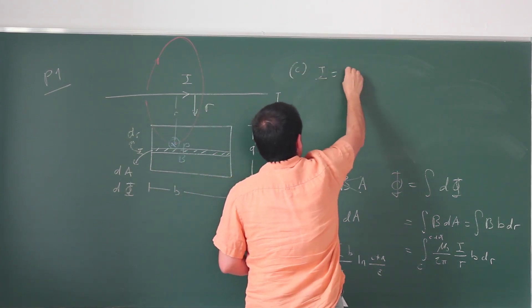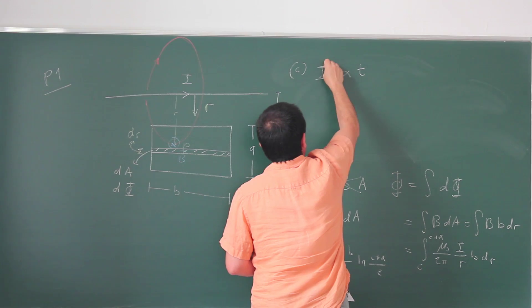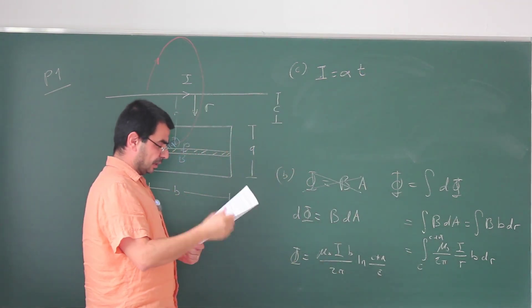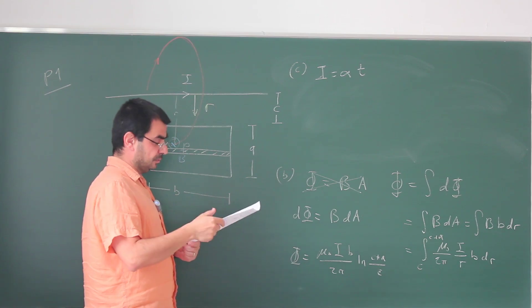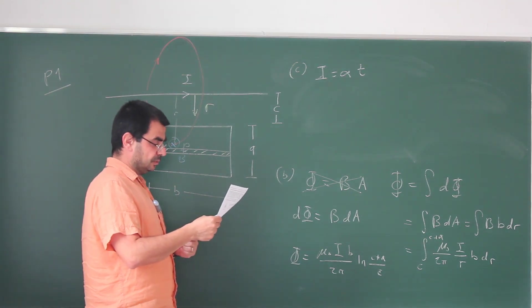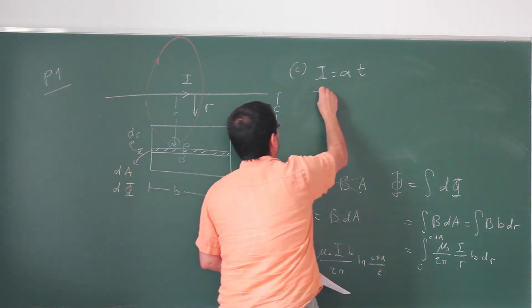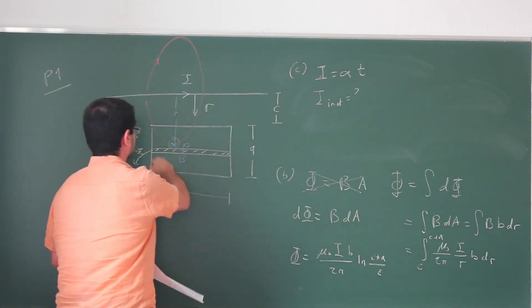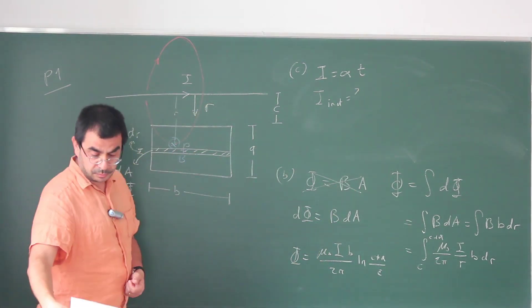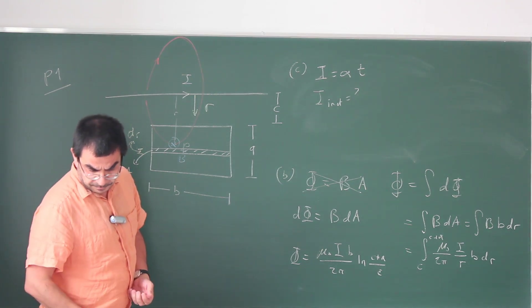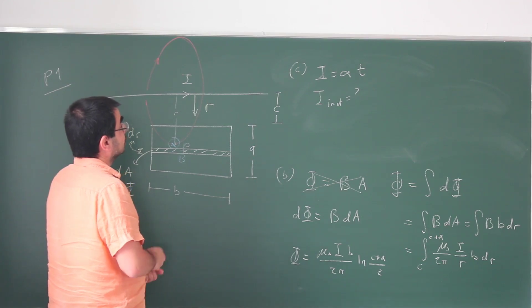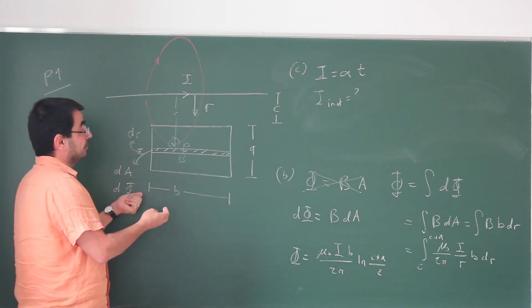So the current is increasing linearly as a function of time as alpha times t where alpha is some positive constant. What's the magnitude and direction of the induced current I induced in the loop? So I induced is the current in this loop. Explain briefly how the induced current's direction is determined.